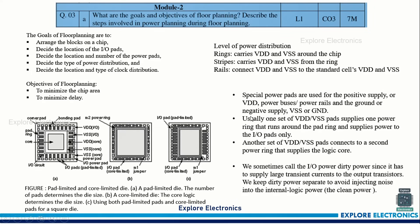Coming to Module 2: what are the goals and objectives of floor planning, and describe the steps involved in power planning during floor planning. First, state the goal of floor planning, then the objectives are given in points. Different power distribution levels are shown, and the diagram gives the idea of how different power distributions are going to be made with respect to the IO pads.